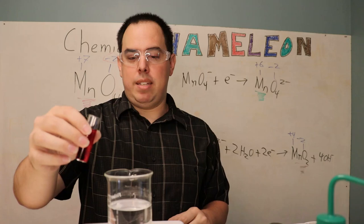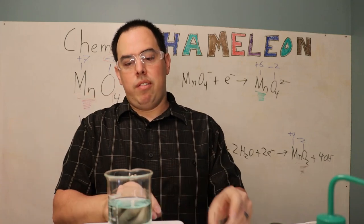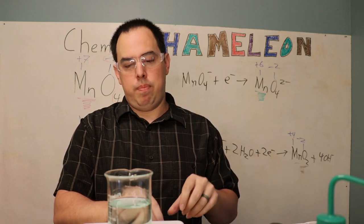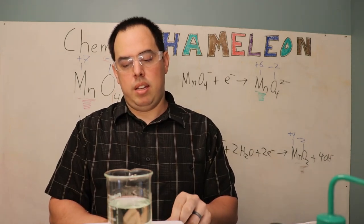So we have our potassium permanganate, we're going to add it to our sucrose water. So it went to that blue very very fast, now it's to the green and now we're going to pick up the stirring just a little bit and we're going to see it transition into a yellow.